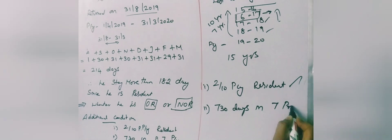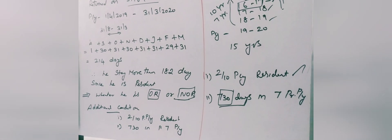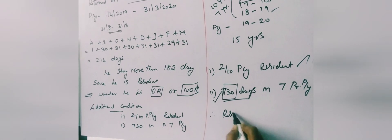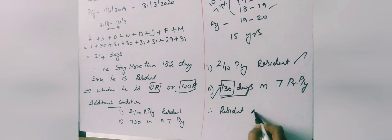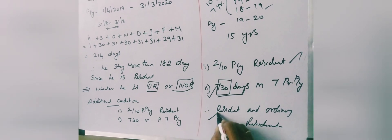Checking the additional conditions: condition one — resident in 2 out of 10 preceding previous years — is satisfied. Condition two — 730 days in 7 preceding previous years — is also satisfied. Therefore, the residential status of Mr. O is Resident and Ordinary Resident.